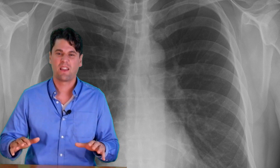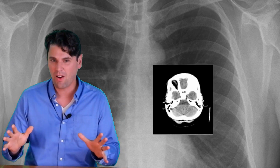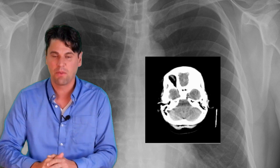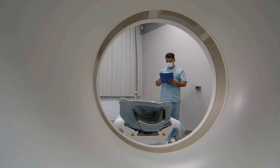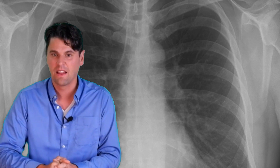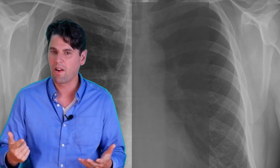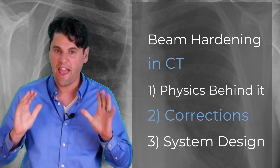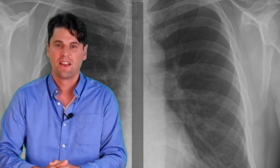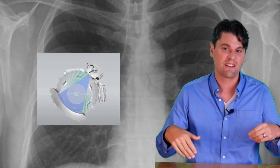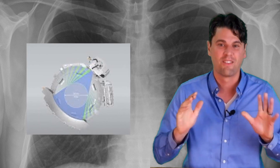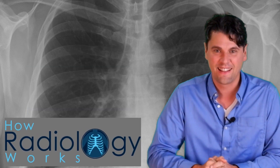All right, RAD Nation. Today we're going to be talking about beam hardening. This is an image artifact in CT. We're going to be talking about where it comes from, how to correct it with algorithms on CT scanners, and then on new CT scanners, how the physics of the acquisition can actually be used to correct for beam hardening, right here at How Radiology Works.